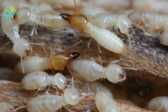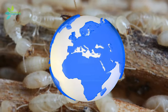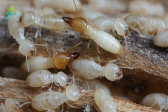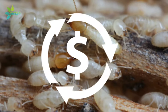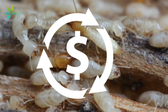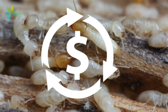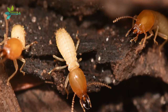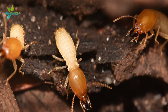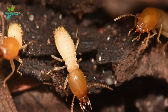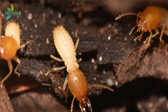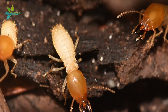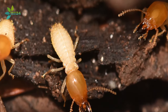Formosan termites were spread by marine commerce and are one of the most destructive termite species in the United States, causing millions of dollars of structural damage in the southeastern United States, California, and Hawaii each year. They can multiply and destroy wood structures faster than other native subterranean species — not because they eat faster, but because their nests are enormous and can contain millions of termites.